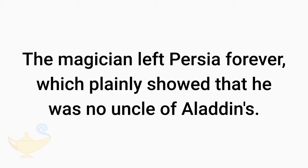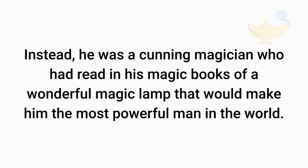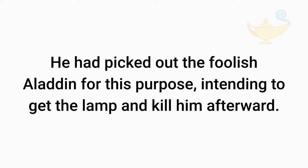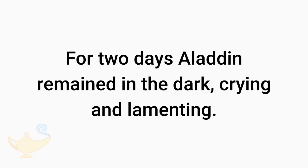The magician left Persia forever, which plainly showed that he was no uncle of Aladdin's. Instead, he was a cunning magician who had read in his magic books of a wonderful magic lamp that would make him the most powerful man in the world. Although he was the only one who knew where to find it, he could only receive it from the hand of another. He had picked out the foolish Aladdin for this purpose, intending to get the lamp and kill him afterward.